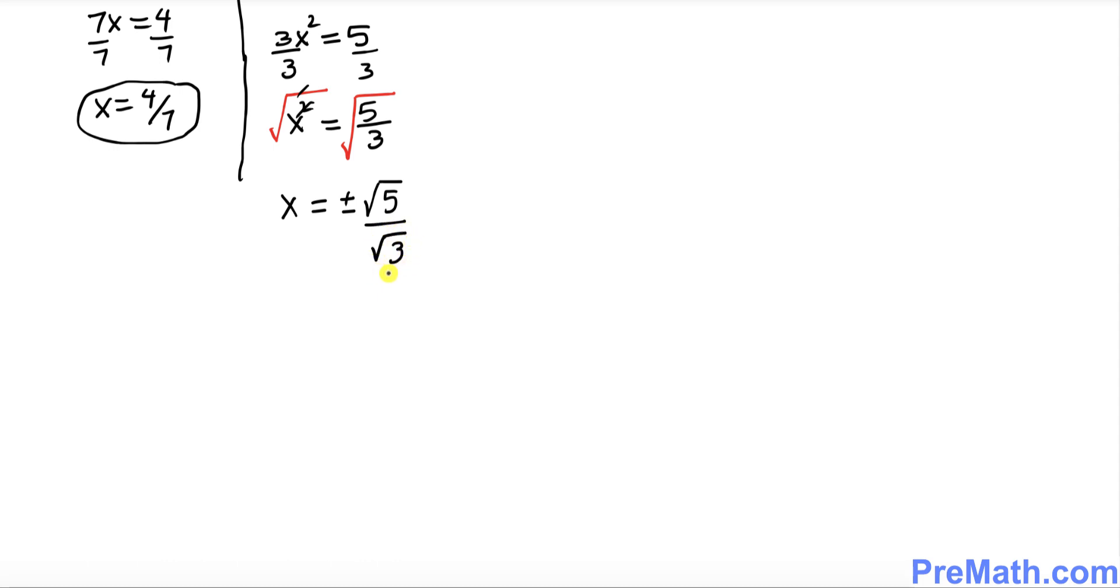I'm gonna put down square root of 5 over square root of 3. And now we're gonna use the rule that square root, the radical, must not be at the bottom. Now I just put down these fractions right up here and we're gonna rationalize it. That means we're gonna remove this radical from the bottom. To do that, whatever is at the bottom over here, you multiply and divide by that same number on the top.